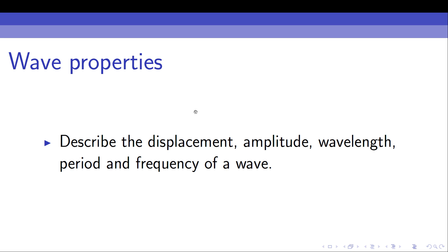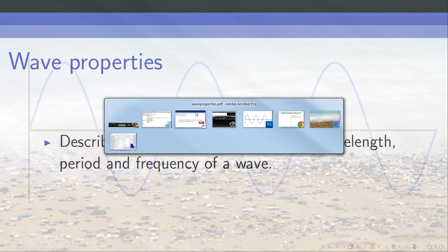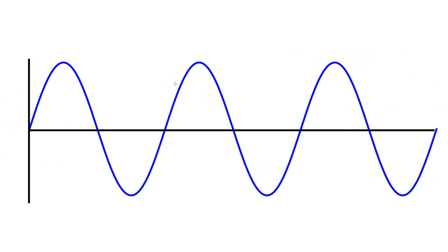A wave is anything that oscillates, that moves back and forth, moves around in a repetitive motion. Most of the waves that we come across in nature take a sinusoidal shape. You might have come across this sine wave shape in maths courses, and the majority of waves do take this sort of shape. Water waves on the surface of a pond, light waves — many examples have a sinusoidal shape.